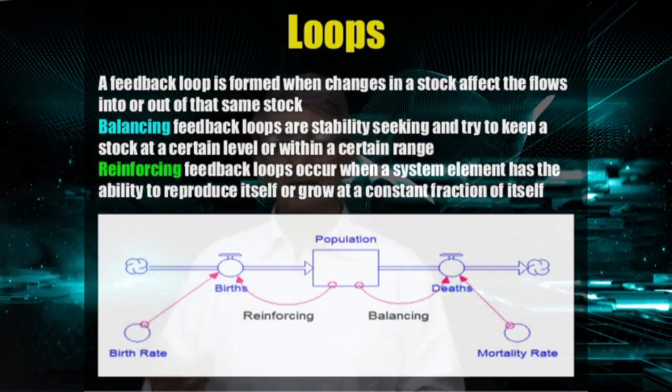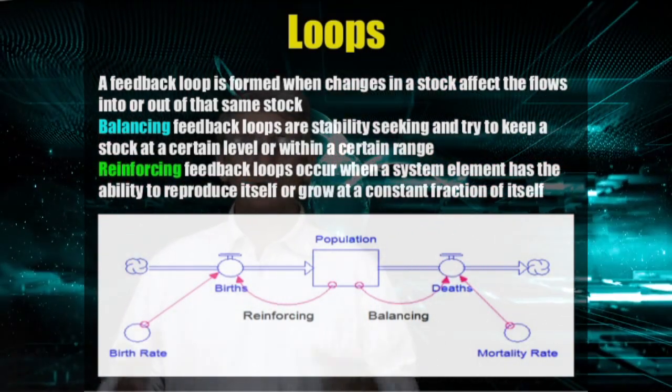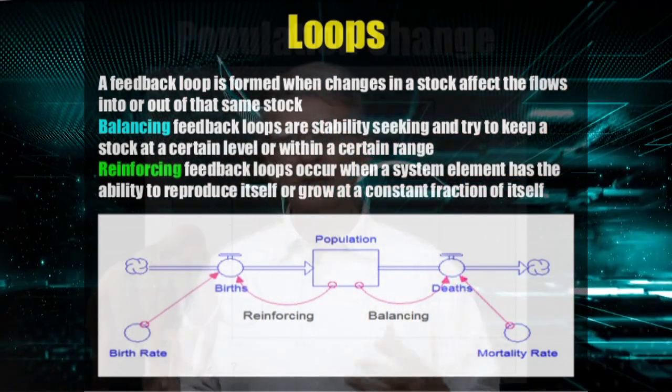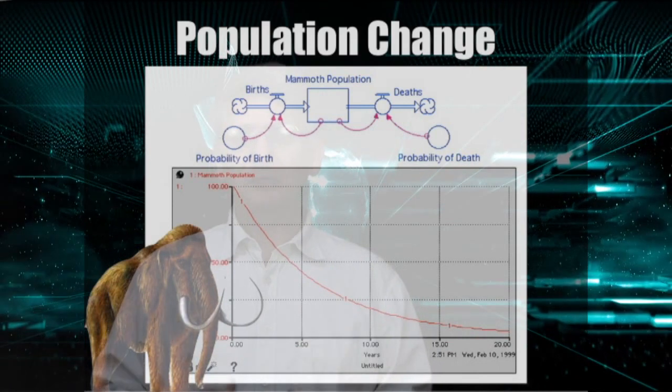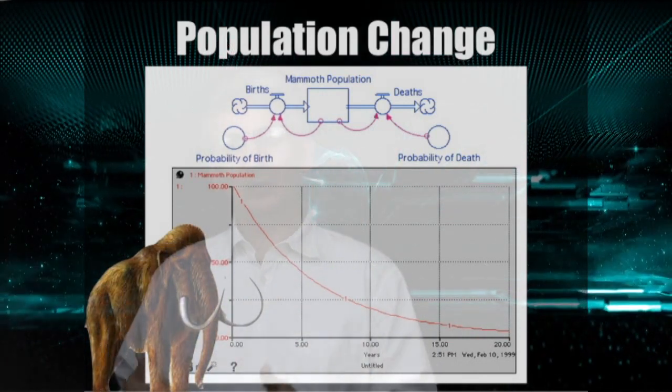But where births do not keep up with deaths, extinction can result. However, the mammoth example is a very simple model, and does not provide sufficient complexity to truly understand the systems involved.